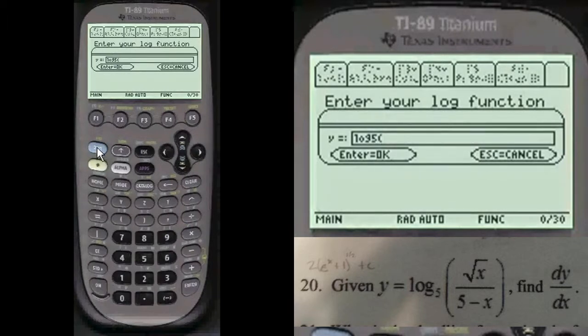And then parentheses, and we're going to put the square root of x divided by, always use parentheses in the denominator, 5 minus x. Close off the parentheses.